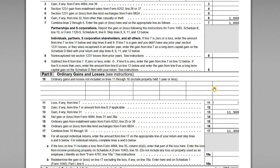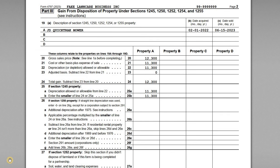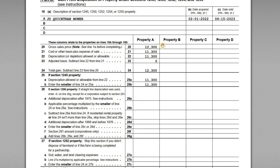Starting with Part III — this is where you report gains from the disposition of these types of property. We've listed the mower: a JD QuickTrack mower, date acquired February 1st, 2022, date sold June 15th, 2023. On line 20 we have the gross sale price of $12,300. Our original cost in the property was $11,300, and the amount of depreciation claimed was also $11,300 — we got 100% bonus depreciation in 2022. Subtracting line 22 from line 21, the adjusted basis is zero — the property has been fully depreciated, so we have no basis remaining. The total gain is $12,300.